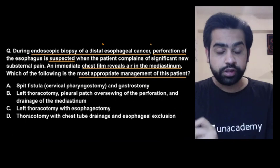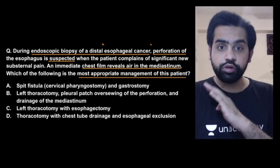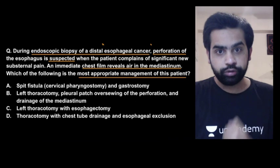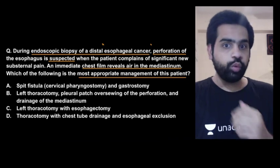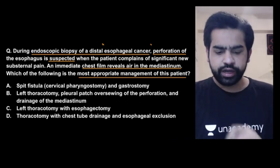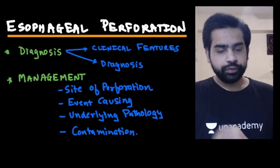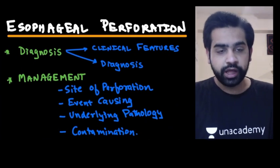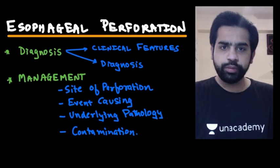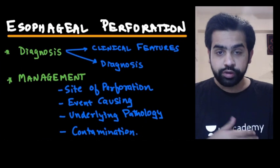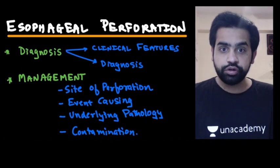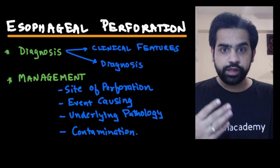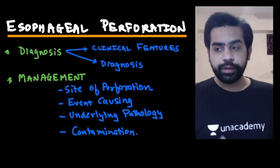The answer is option C — left thoracotomy with esophagectomy. Let us summarize esophageal perforation. When will you suspect a patient has esophageal perforation? After a procedure, if the patient complains of retrosternal pain, presents with shock, or presents with subcutaneous emphysema, you suspect that a perforation may have occurred during the procedure.